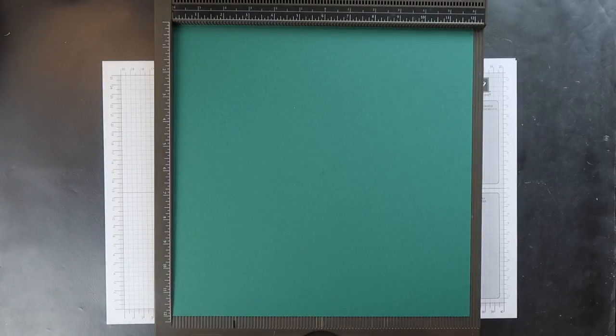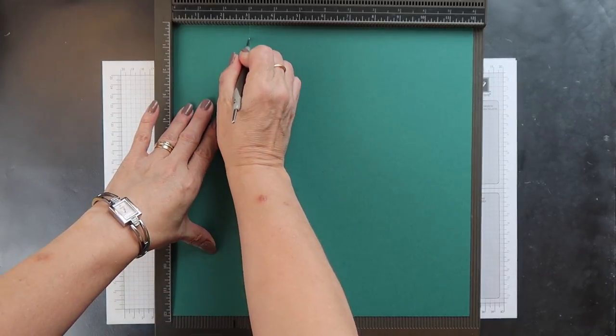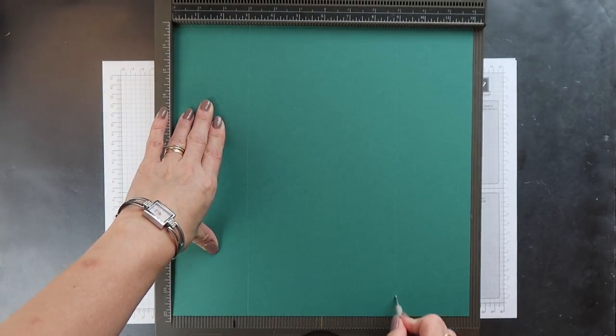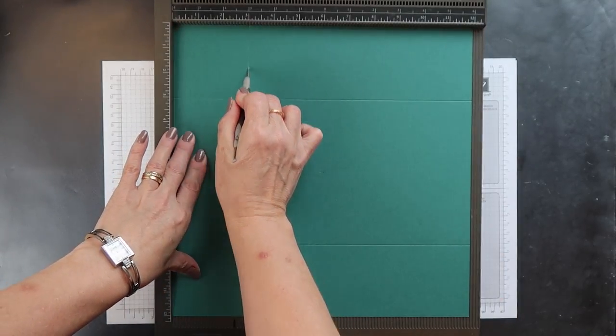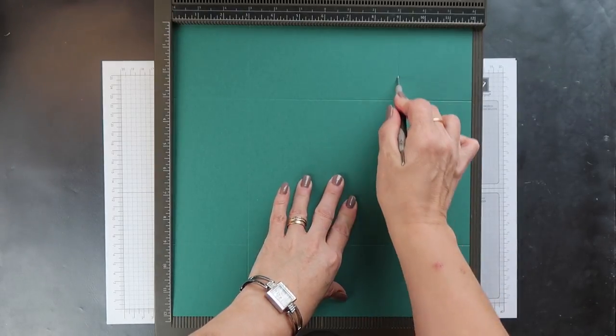I'm starting with a sheet of 12 inch by 12 inch tranquil tide cardstock. Before you begin, just check that your cardstock measures exactly 12 inches. If it's out even just slightly then this will do funny things when you come to fold your card. Now I'm scoring this on two sides at three inches and nine inches.